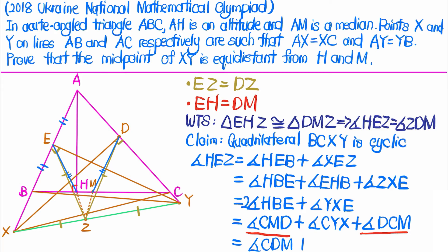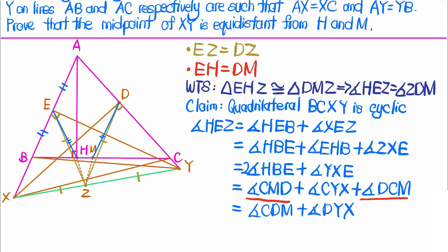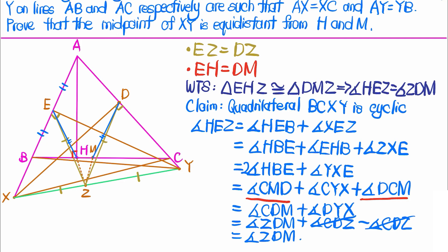These two angles are the angles in triangle DCM, so they add up to give angle CDM. We can rewrite angle CDM as angle ZDM plus angle CDZ, and angle DYX equals minus angle CDZ, since DZ equals ZY. These two terms cancel, leaving just angle ZDM. So we have proved that angle HEZ equals angle ZDM, which by SAS gives the congruence, so HZ equals MZ and we are done.